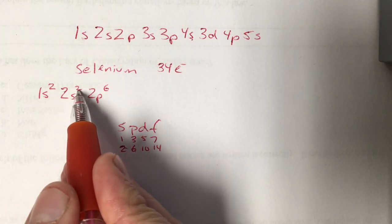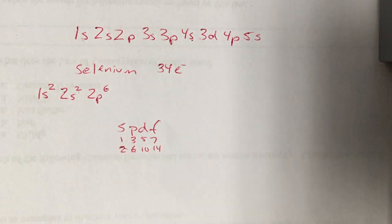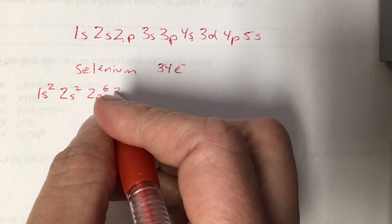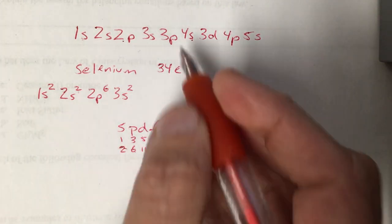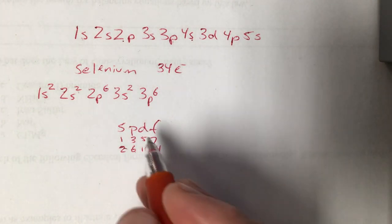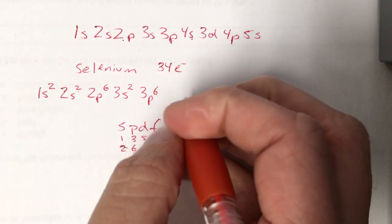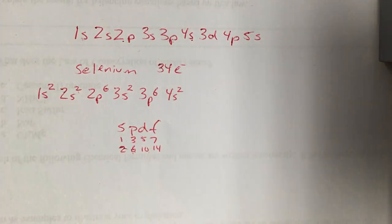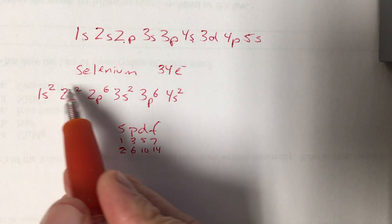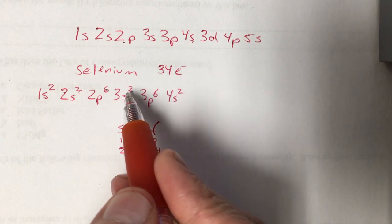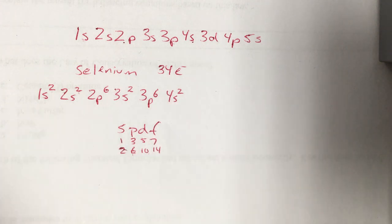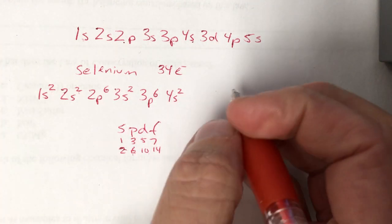Back to what we're doing. 2 plus 2 is 4 plus 6 is 10. We have 10 of our 34. We still got 24 to go. So we've got a ways to go yet. Next one up is 3s. And again an s holds 2. Next one up is 3p. A p holds 6. And then the next one up is 4s. It holds 2. Good time to see where we're at. See how close to that 34 we're getting. 2 plus 2 is 4, plus 6 is 10, plus 2 is 12, plus 6 is 18, plus 2 is 20. So we still have 14 more to go.